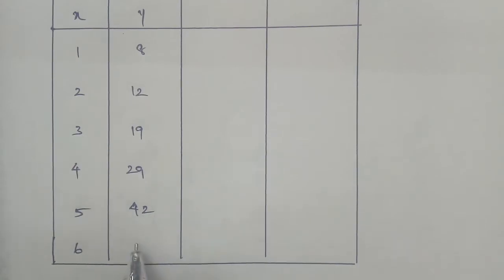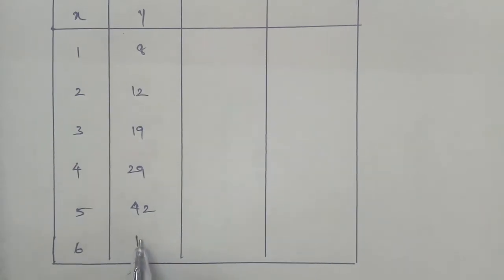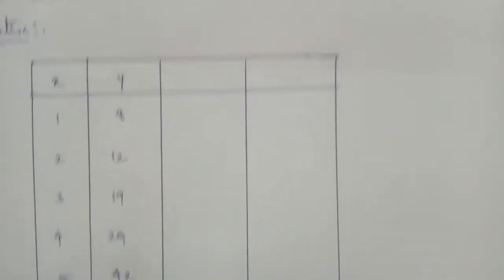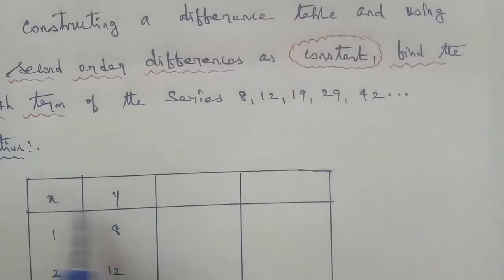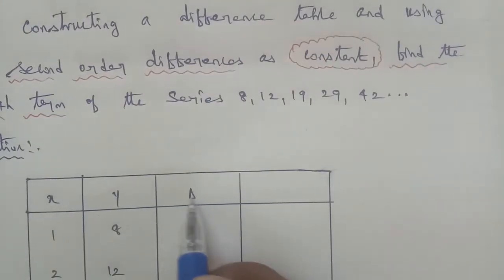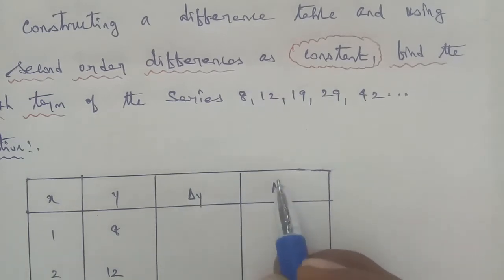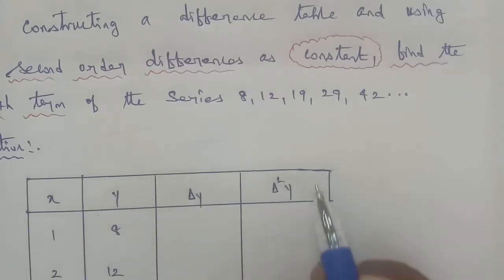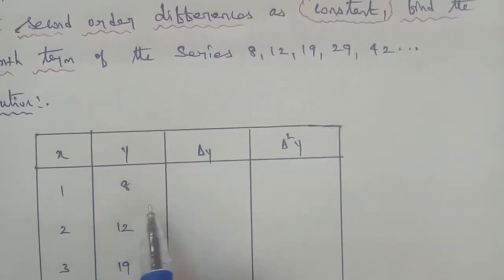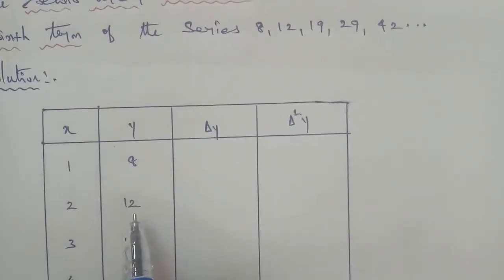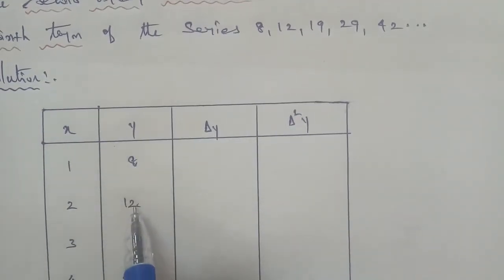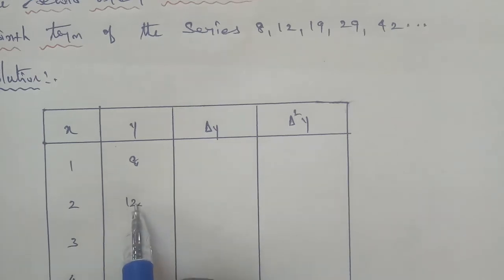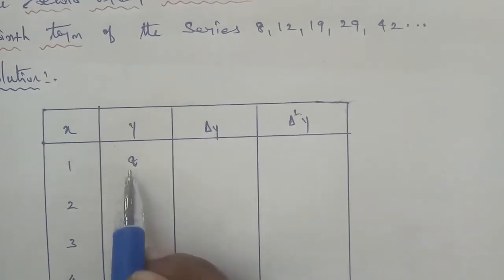In the table we also have columns for delta Y and delta squared Y. Now we apply the forward difference method. The first difference delta Y is computed as: second number minus first number, and so on for each consecutive pair.